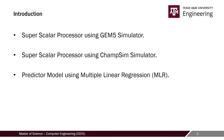The project is divided into three parts. The first part is where we would be designing the Superscalar Processor using GEM5 Simulator and analyzing the results. In the second part, the Superscalar Processor would be analyzed using ChampSim Simulator. And in the third part, we would be developing a predictor model using multiple linear regression.